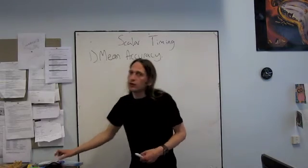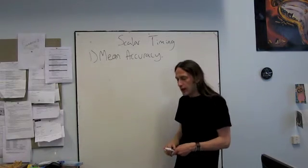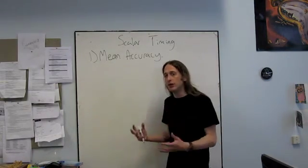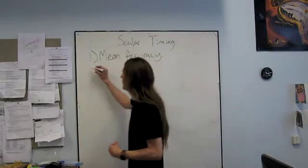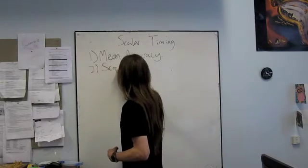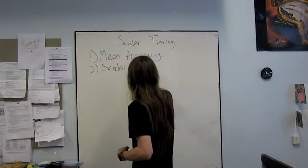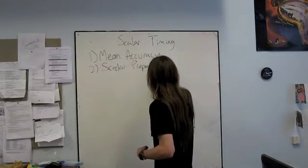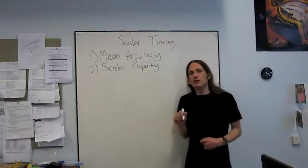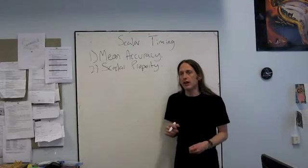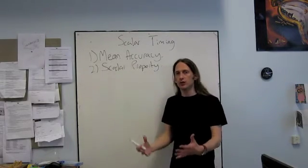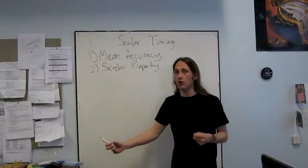The second prediction or description of the timing data is that the timing data should exhibit the scalar property. In a nutshell all this really means is that as we increase the magnitude of the duration, as the duration gets longer, we get steadily worse and worse at timing it.